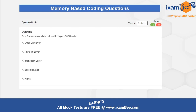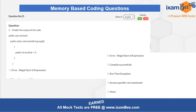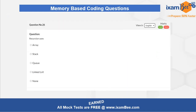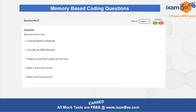The fifth question is related to a piece of code — you have to guess the correct output, or if there is a problem in the code, identify whether it is a compile-time error, a runtime error, or if it compiles successfully. Question number six is about recursion — which kind of data structure does recursion use? Question number seven is related to abstract classes in Java — what exactly they do, what functions they have, and what the basic feature of an abstract class is.